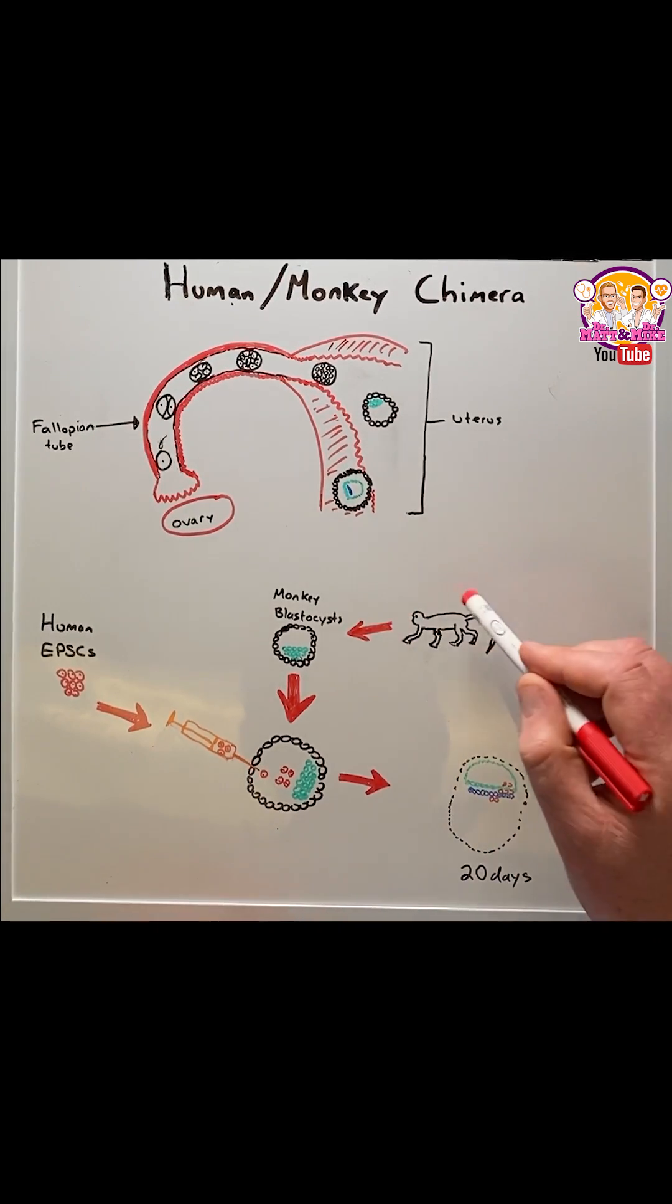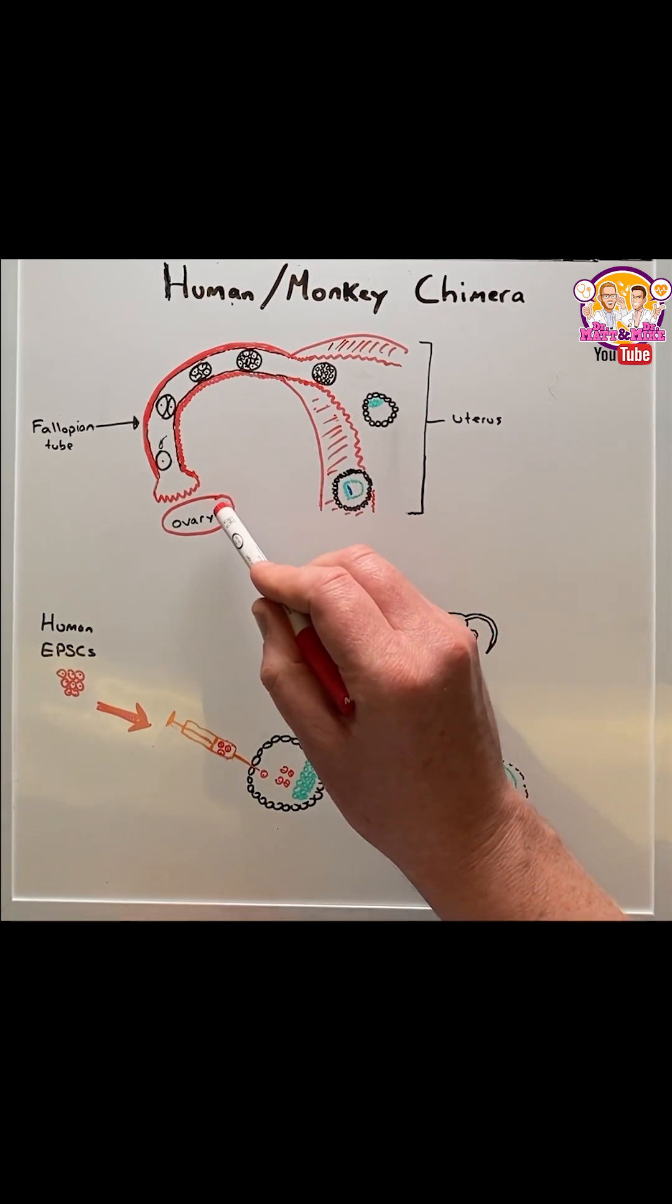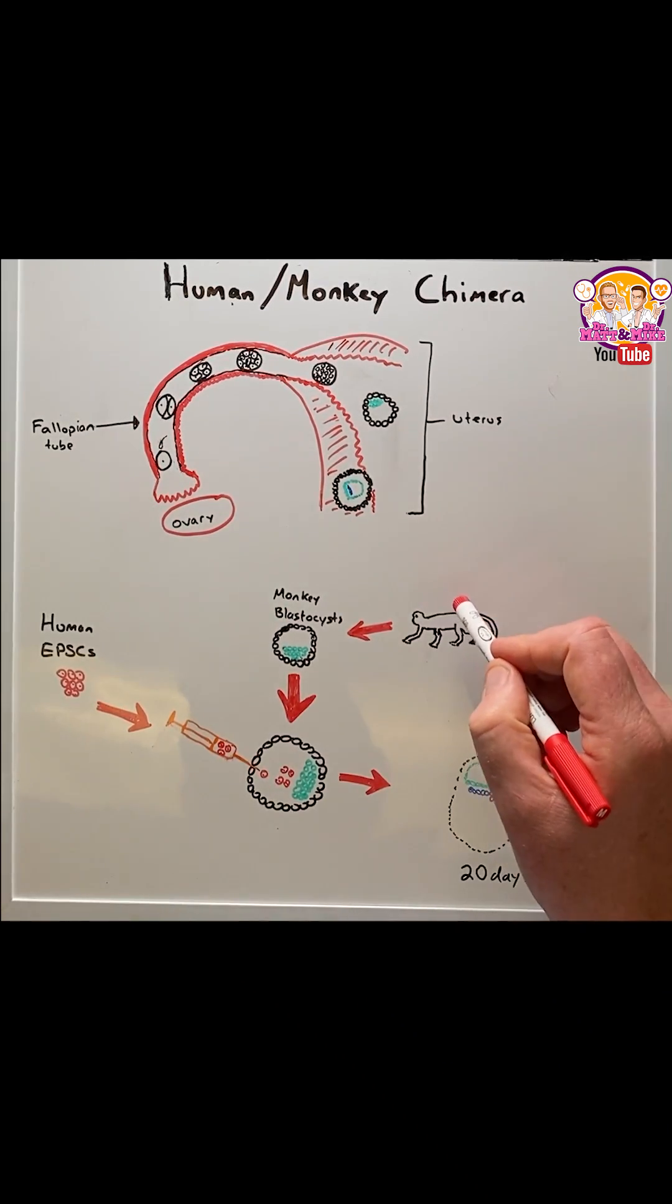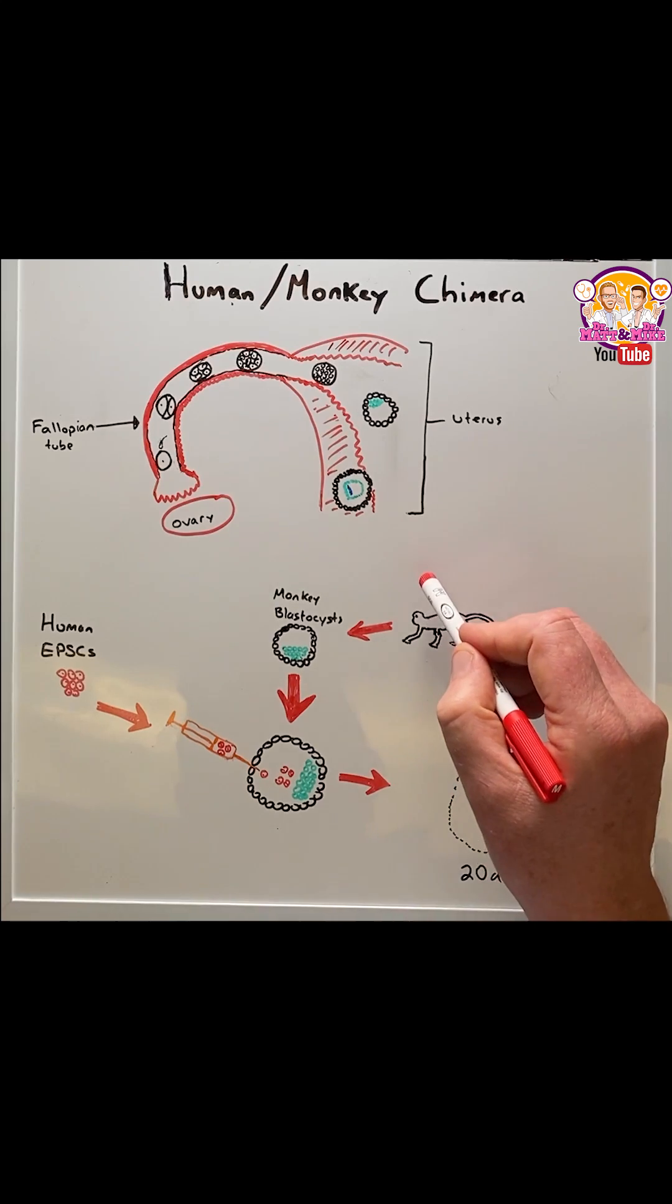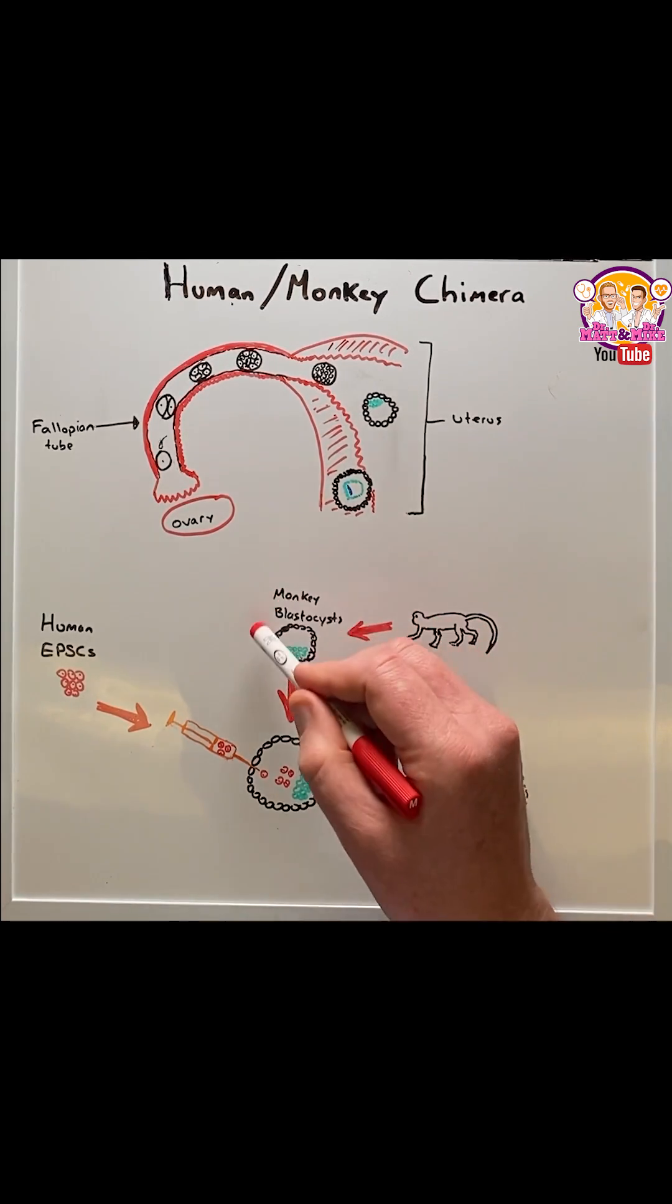Here they used macaque monkeys. They extracted egg cells from the female ovaries and added sperm cells from the males, and in vitro they produced monkey blastocysts.